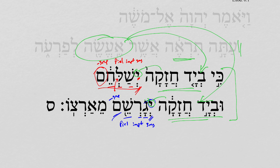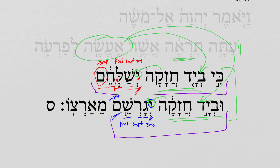The second observation is we notice the completely parallel lines up to this point: 'By a mighty hand he will send them out. He will drive them out.' But then notice how we have a plus-one at the end of the last line — 'from his land.' And so this is almost like a staircase, a quasi-staircase poetical structure in the Lord's explanation.